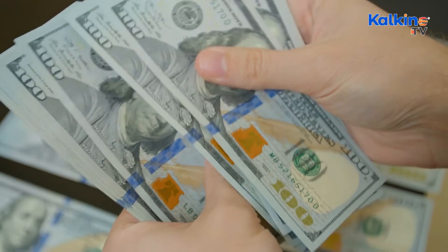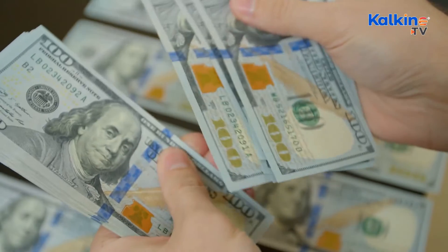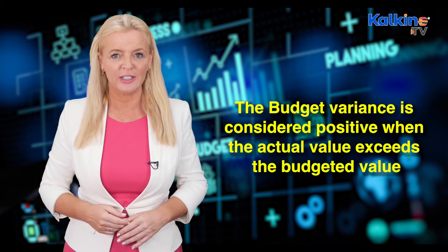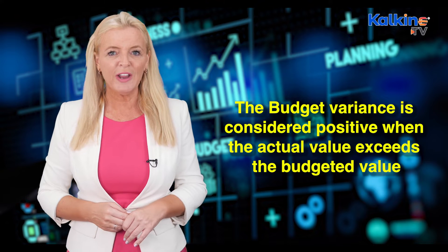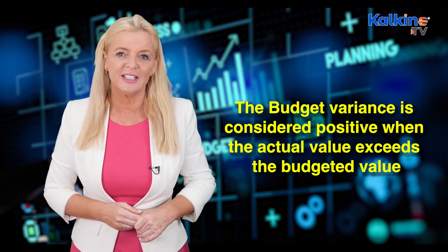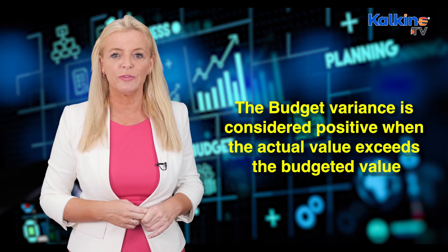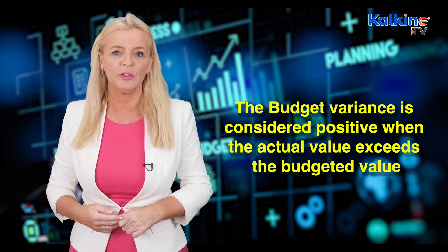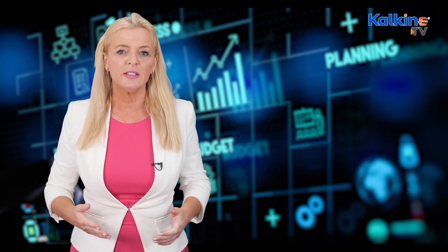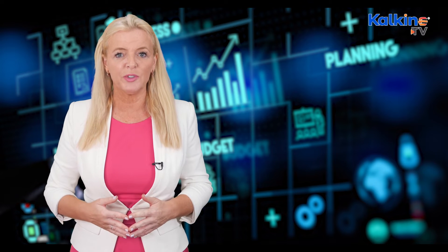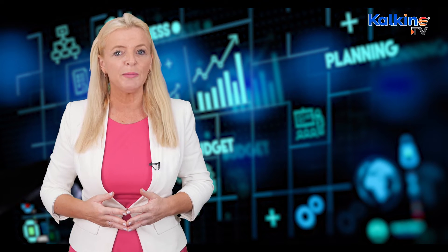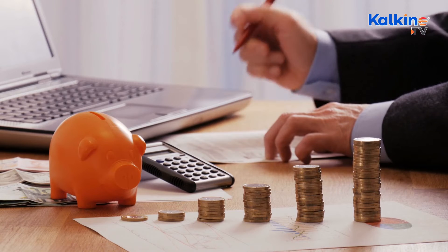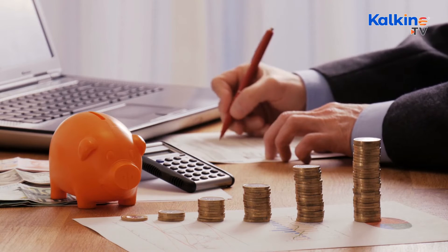The variation between the budgeted amount and the actual amount of revenues or expenditures is referred to as a budget variance. The budget variance is considered positive when the actual value exceeds the budgeted value. It arises because of assumptions that may be wrong or because of the advent of uncontrolled events.